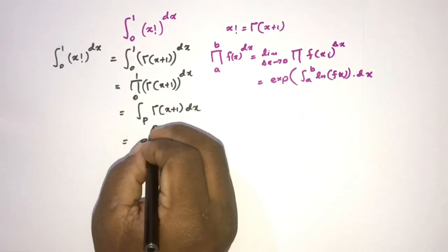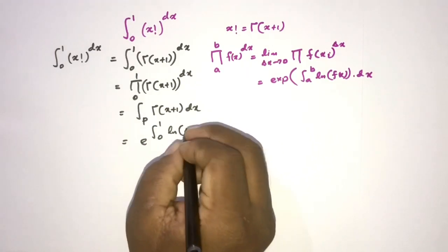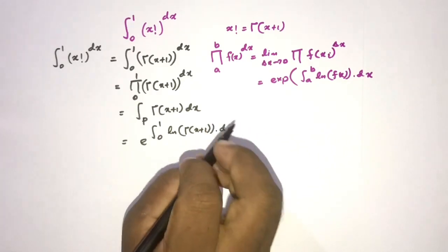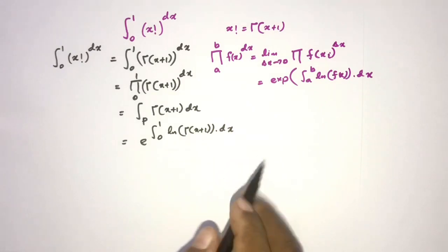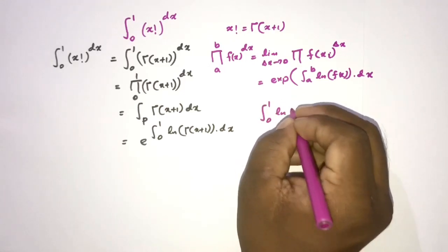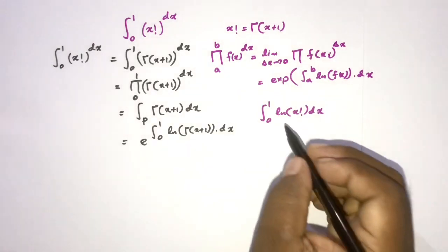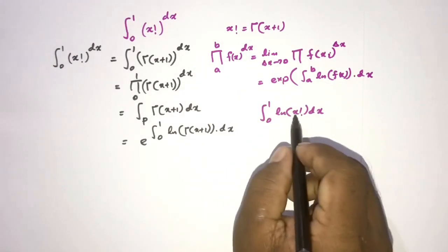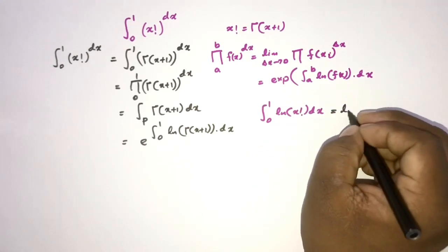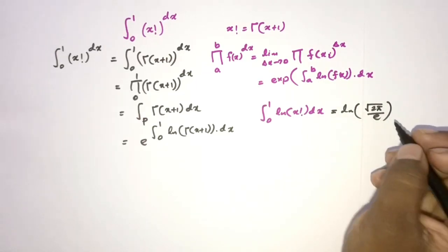This equals exp of the integral from 0 to 1 of the natural log of gamma of x plus 1 dx. In a previous video I solved the integral from 0 to 1 of the natural log of x factorial dx — I will add the link in the description. The answer to that integral is the natural log of the square root of 2 pi over e.